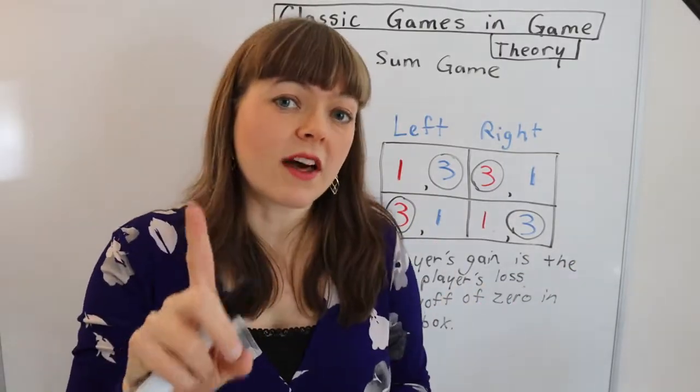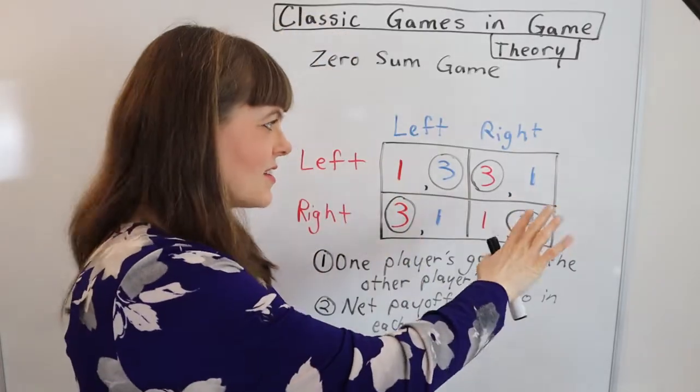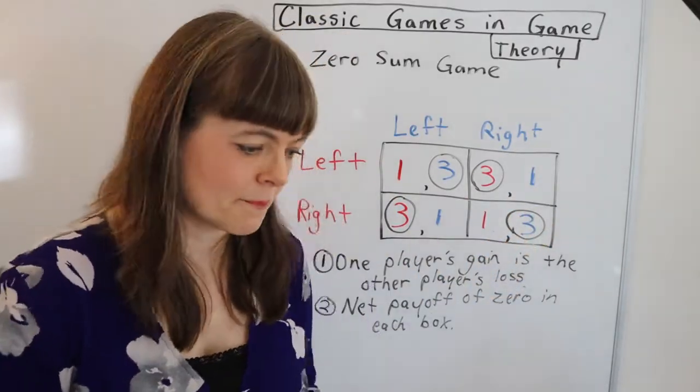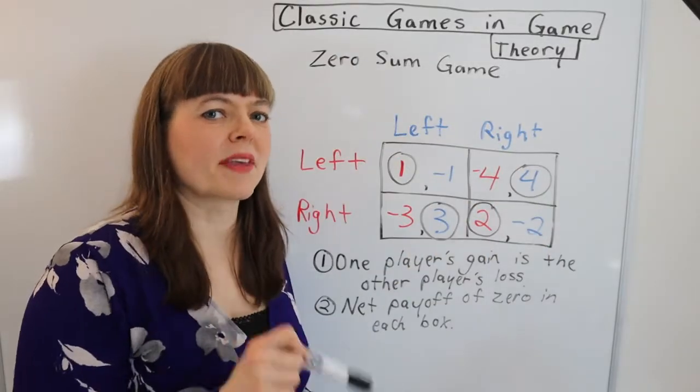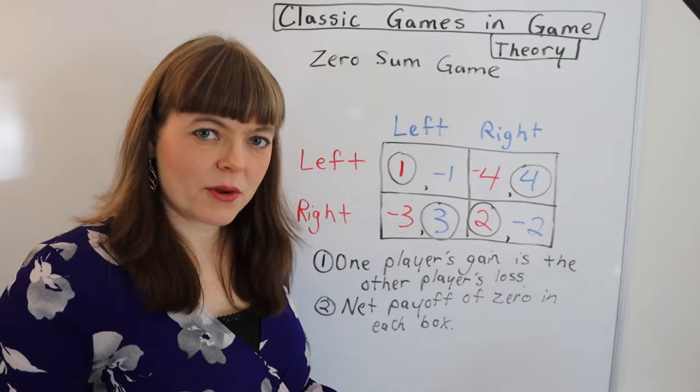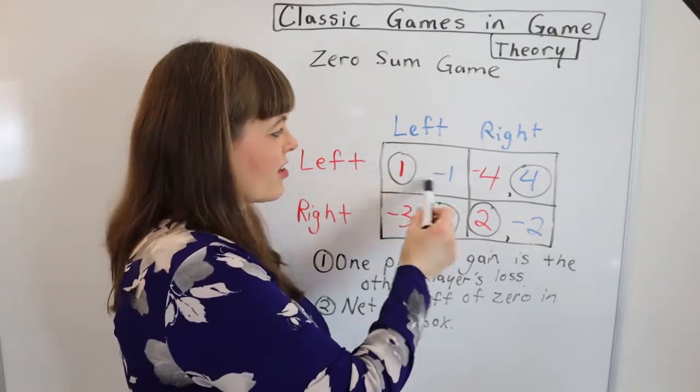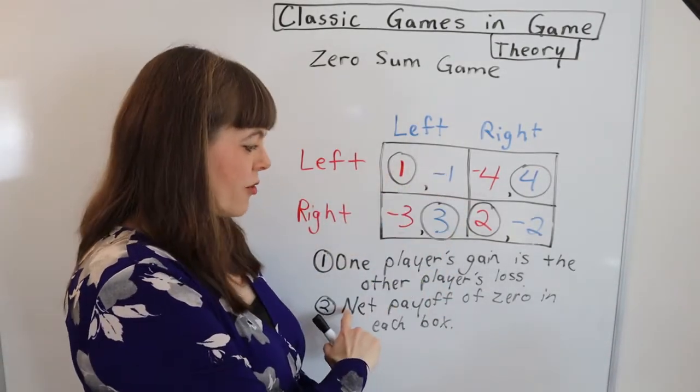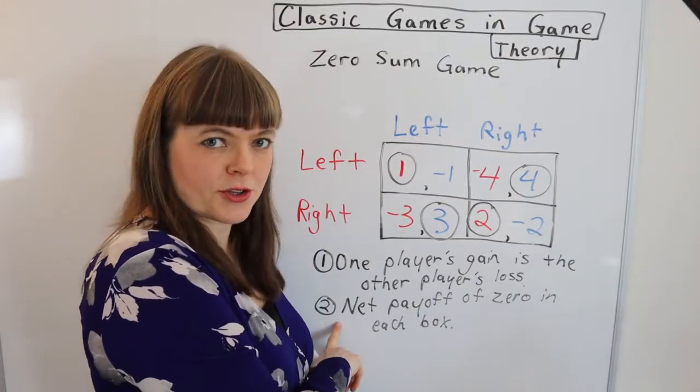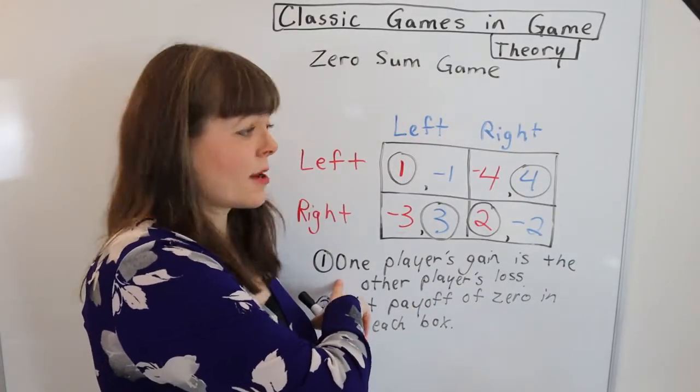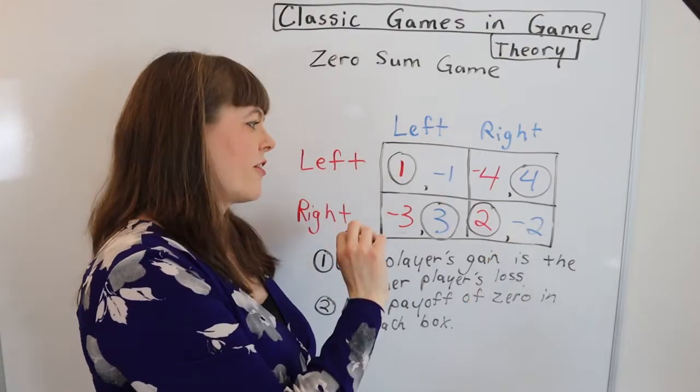Let me look at one other scenario. I'm going to set up a different game here and see if you think this is zero sum. Is this a zero sum game? Yes, I would argue that this is because every single box does add up to zero. There's a net payoff of zero in each box. It definitely meets criteria number two. It also meets criteria number one. Each player's gain is the other's loss.